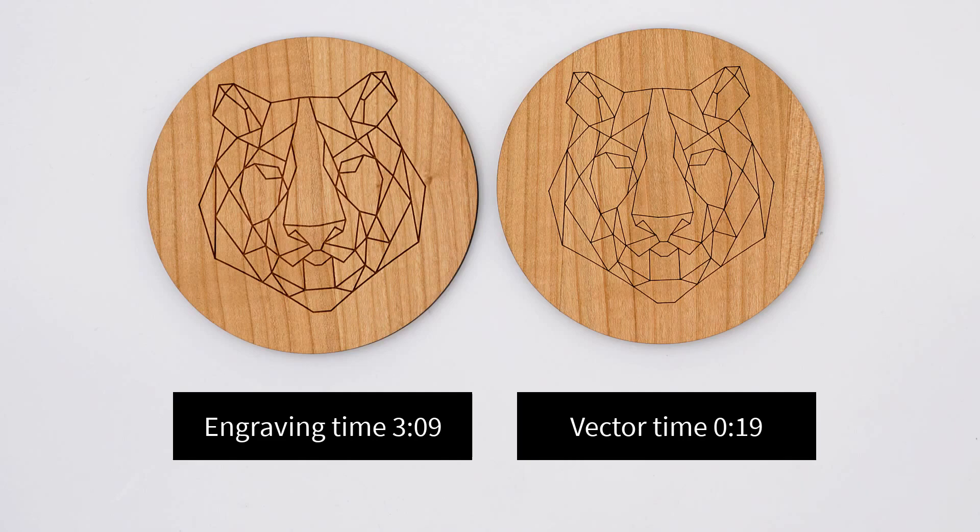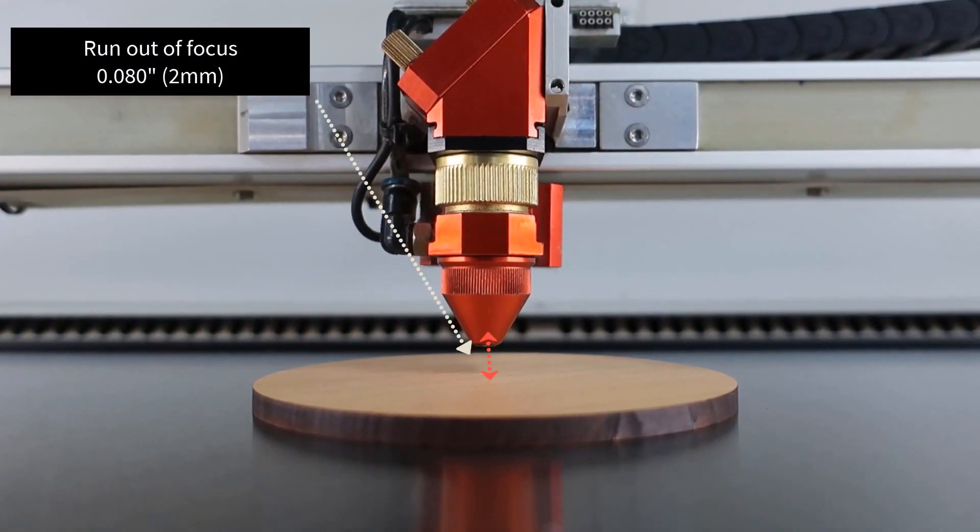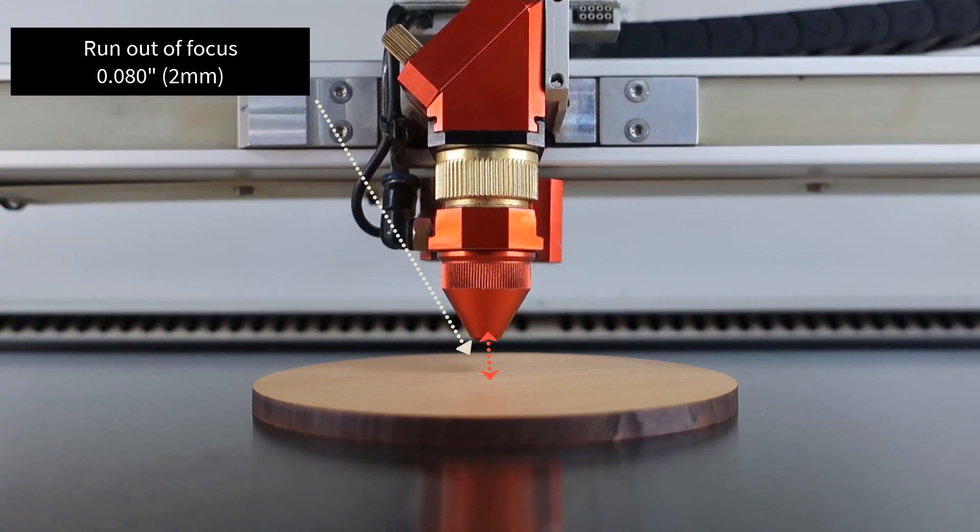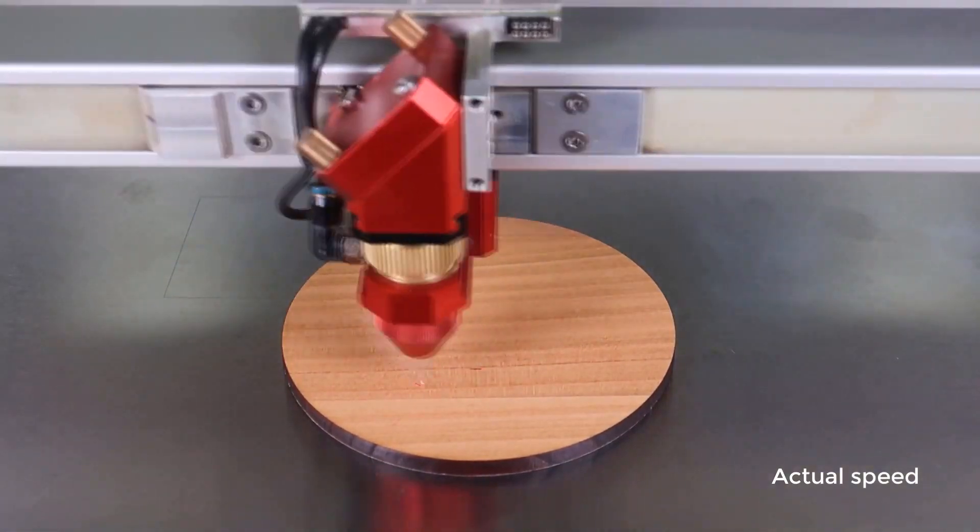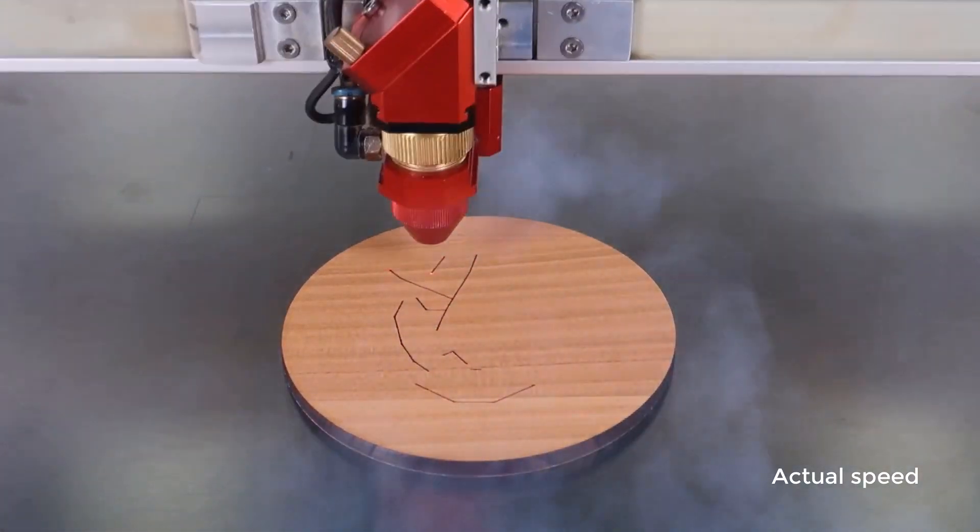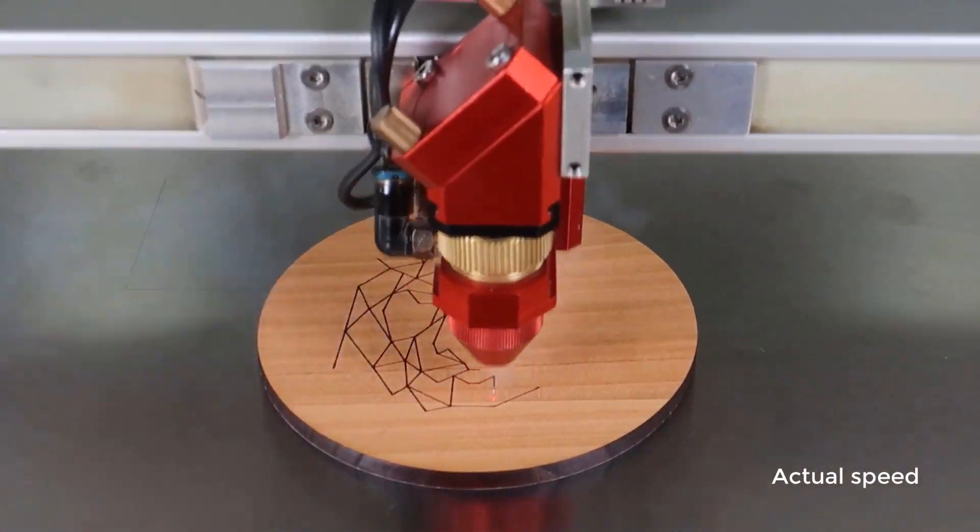Now here's the hack: let's take the laser out of focus by 80 thousandths of an inch. More precisely, we've set the Z offset in job control to negative 0.08 inches. What ends up happening is the beam width becomes larger when cutting the vector lines, resulting in thicker etched lines. The lines are the same thickness as in our original raster engraving but with the speed of vector cutting.